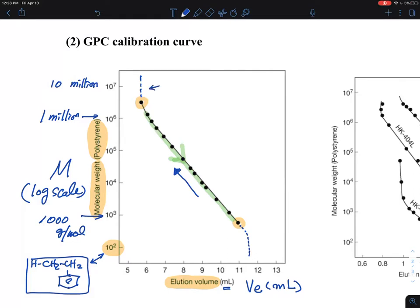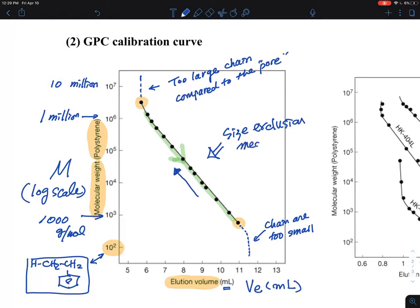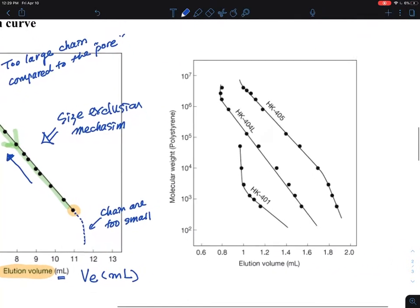So this is what is called the ranges of analysis, which is characteristic to each polymer. So here, what's going to happen is two large chains are too large compared to the pore in the GPC column, and then this is essentially chains are too small compared to the GPC column. And this is essentially size exclusion mechanism.